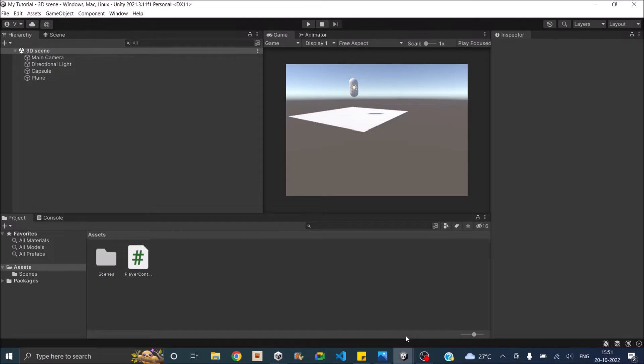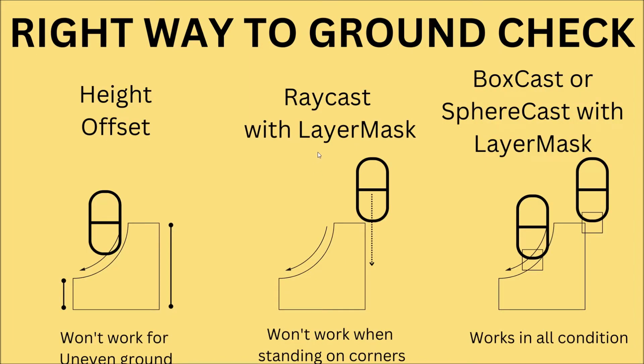There are different ways to ground check in Unity. One option is just checking the height offset — the initial height of the player versus the initial height of the ground. If the difference is greater than some value, we decide the player is not on the ground. This works if your ground is even with no slopes or steps, but it runs in the update function so it takes up performance, and it will not work if you have a slope.